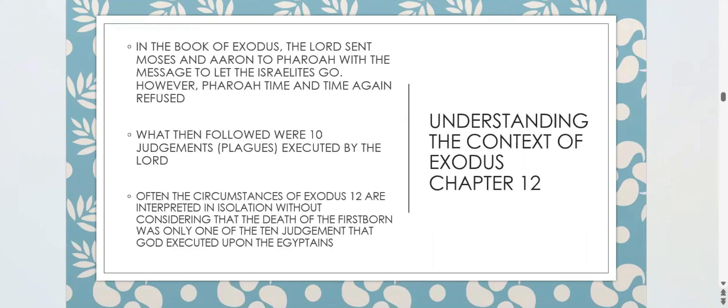Passage context represents a complete thought, sometimes comprising multiple chapters. Just as Romans 9, 10, and 11 form a passage context, to understand Exodus 12 we must go back to Exodus chapter 1 — all of that is involved in the passage context. If we simply go to Exodus 12 without referencing the previous chapters, we interpret it in isolation and won't get a complete picture.